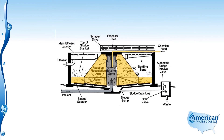Coagulation happens in the mixing zone and flocculation happens in the outer areas of this cone. The water then flows underneath this reaction cone and forms a sludge blanket at the bottom of the clarifier. Any water leaving this center chamber has to go through the sludge blanket and flow upward — that's where the phrase 'upflow clarifier' comes from.